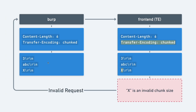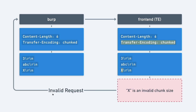The timing technique works because when we send the first request and it arrives at the frontend server, if the frontend is using transfer-encoding chunked, it will read in a chunk size of three, ABC, followed by the next chunk size X, which is an invalid chunk size. So the frontend server will simply reject our request with an invalid request error, showing us that the frontend may be using transfer-encoding chunked.